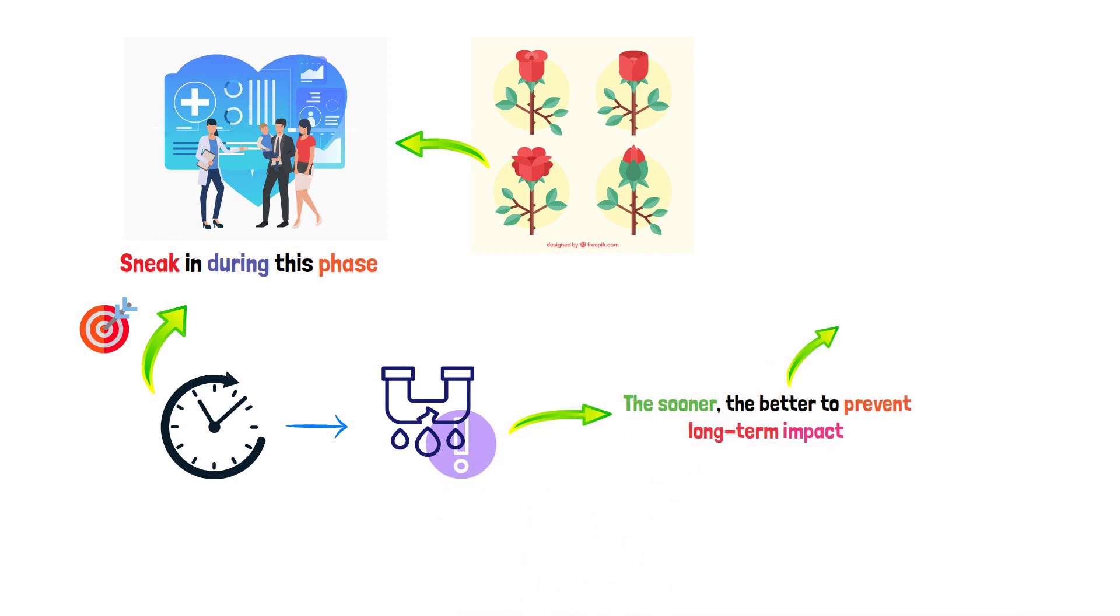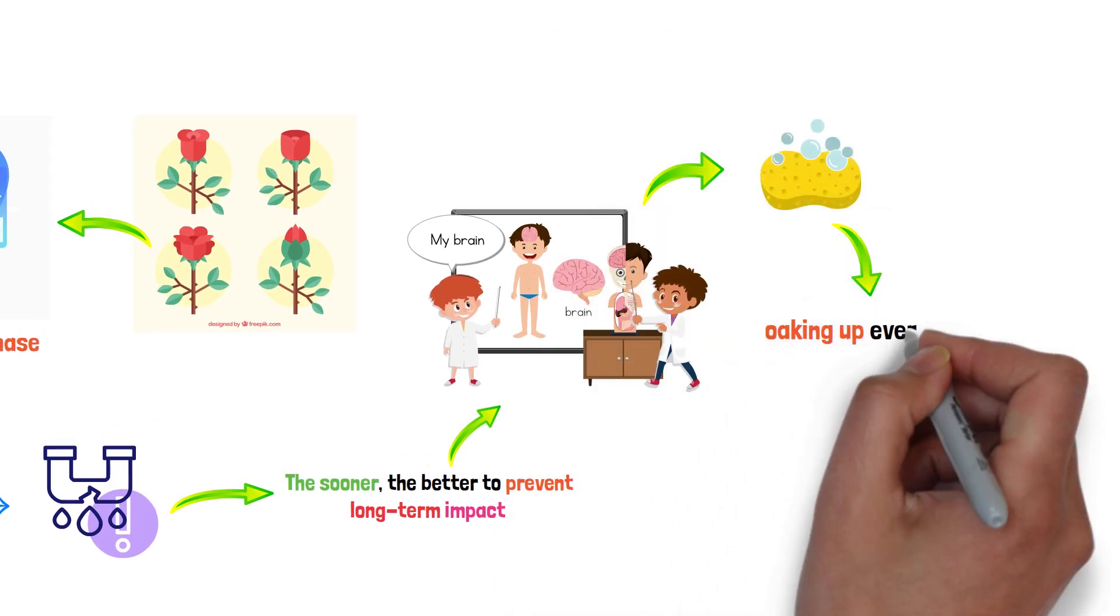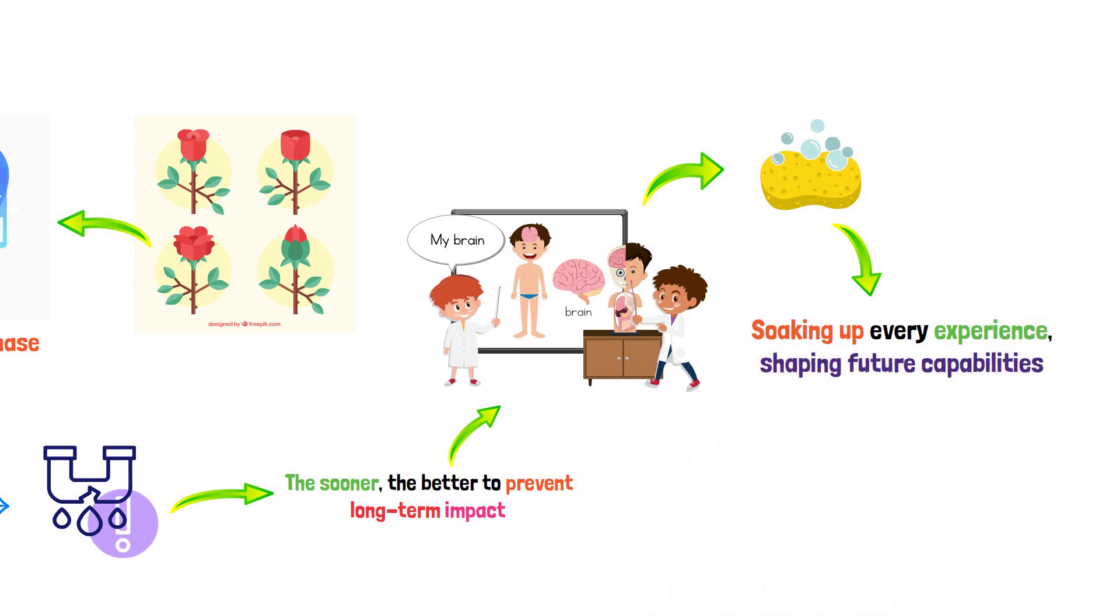The brain's sensitive periods, especially in infancy and early childhood, are like sponges soaking up every experience, shaping future capabilities.